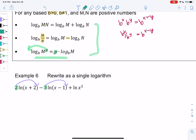So instead of 2 times ln of x plus 2, it'll be ln of x plus 2 squared. And then instead of 3 ln x minus 1, we get minus ln of x minus 1 to the third power. And then the plus ln of x squared is fine so far. So we're using that power property.